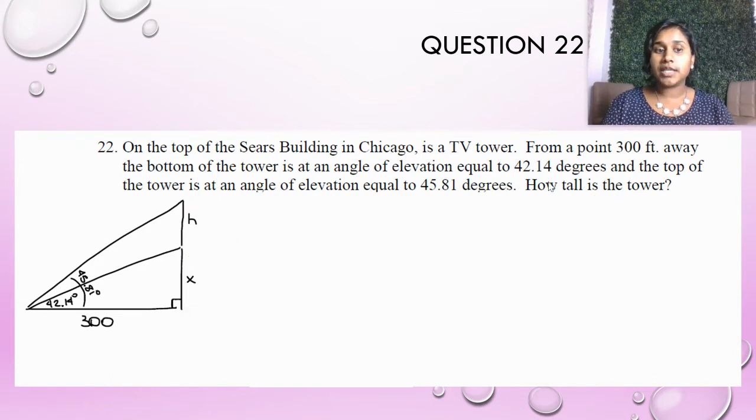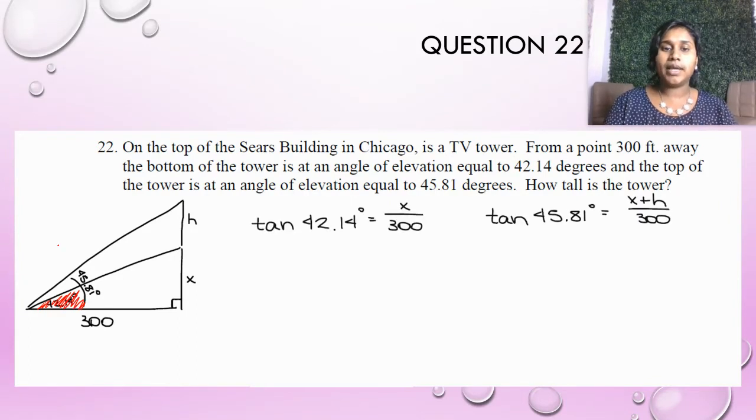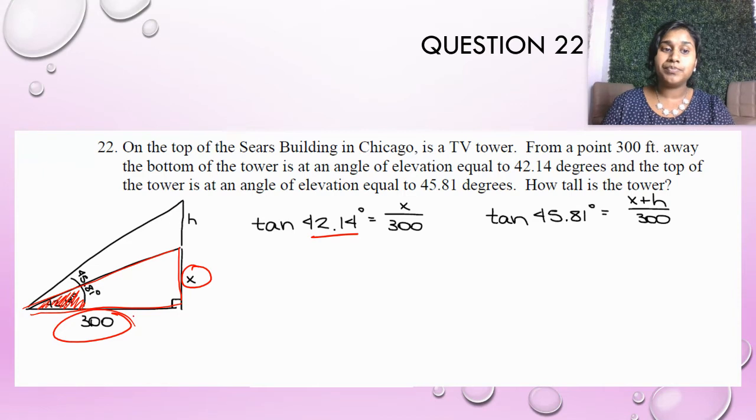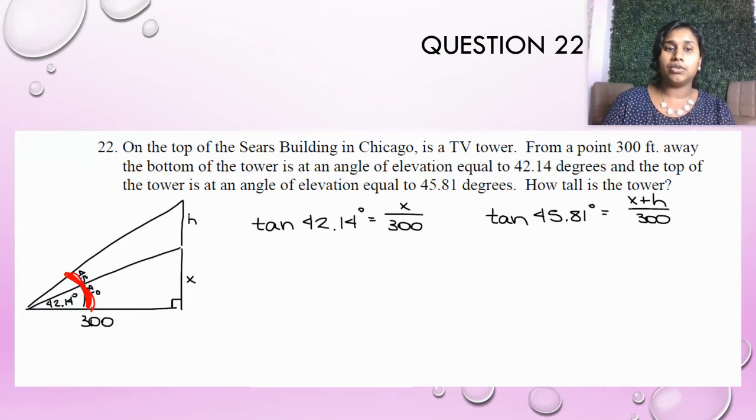So the first thing I can do is set up my information. We know that this little angle right here is 42.14. So I can go ahead and set up that triangle right here as the tangent of 42.14 is equal to that X value over 300. Now I know that that entire angle, right? The tower, the top of the tower's angle elevation 45.81. It's not just going to be this little bitty angle. It's still from that 300 foot point away. So it's the entire distance is 45.